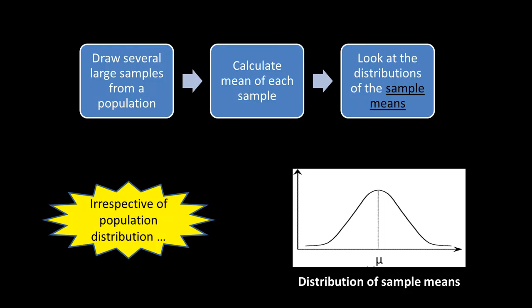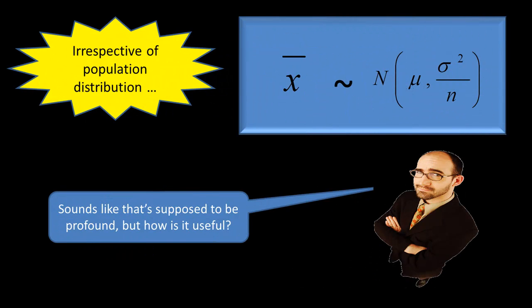If you take samples and compute the mean many times, you'll find that the sample means are distributed normally. That is the essence of the Central Limit Theorem, and this single observation drives a lot of things in statistics. Essentially what de Moivre said is: irrespective of the population distribution, the sample mean x-bar is normally distributed with mean mu — the mu of the underlying distribution — and variance sigma-squared divided by n, where sigma is the standard deviation of the underlying distribution and n is your sample size.